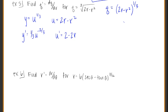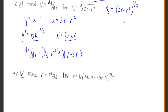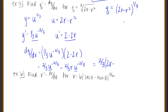Together, dq/dr is these two multiplied: 1/3 u to the negative 2/3 times (2 minus 2r). Distributing 1/3 throughout gives 2/3 u to the negative 2/3 minus 2/3 r times u to the negative 2/3. Plugging in u equals 2r minus r squared: 2/3 times (2r minus r squared) to the negative 2/3, minus 2/3 r times (2r minus r squared) to the negative 2/3. That's the overall derivative.